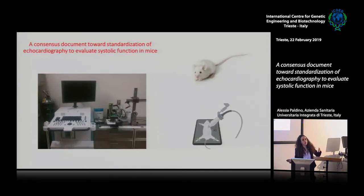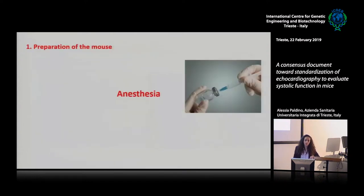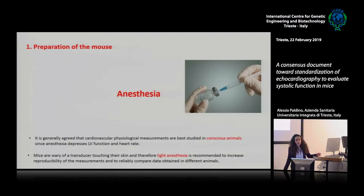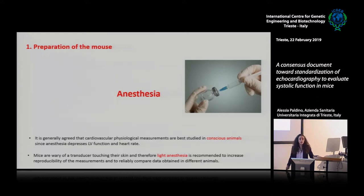We try to give some recommendations for all the steps of the echocardiography study. The first part is the preparation of the mouse, so we should discuss anesthesia. Even though researchers agree that cardiovascular and physiological measurements are best studied in conscious animals — because anesthesia could depress left ventricular function — what we know is that mice are scared and try to move when the transducer touches their skin. Therefore, a light anesthesia is recommended to increase the reproducibility of measurements and for appropriate data comparison obtained from different animals from different labs.